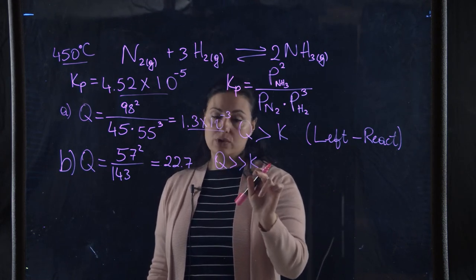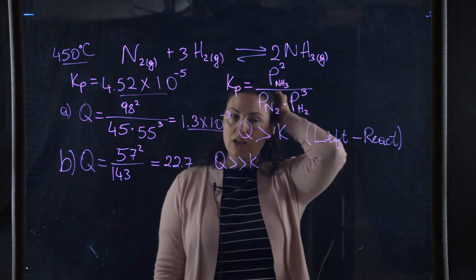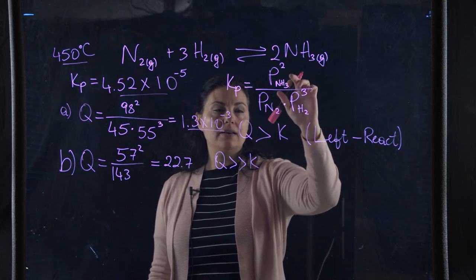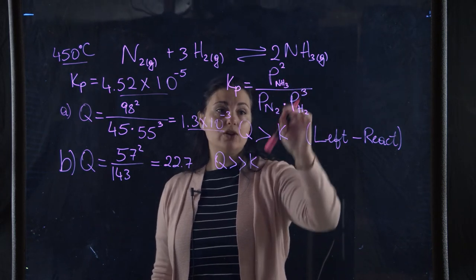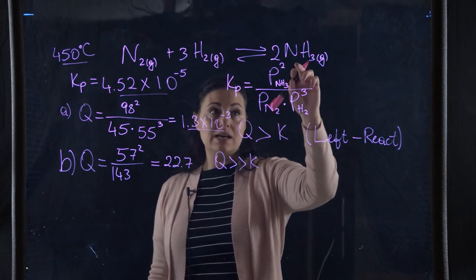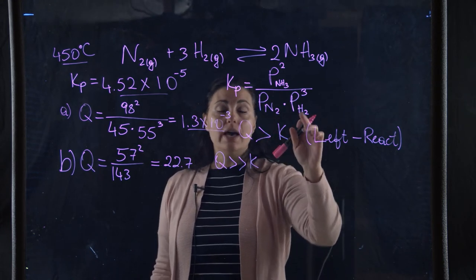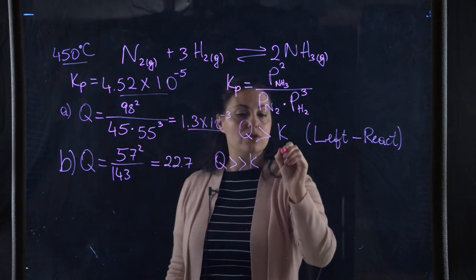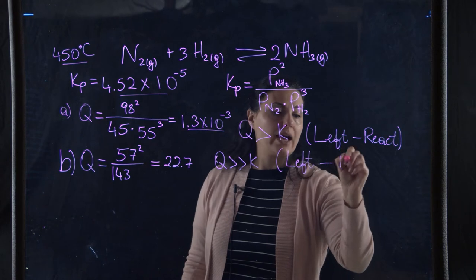To lower Q and make it equal to K, I need to decrease the numerator and increase the denominator. That means getting rid of some NH₃ and making more N₂ and H₂. The only way to do that is if the reaction proceeds to the left, towards the reactants.